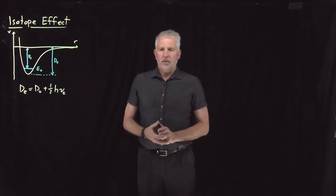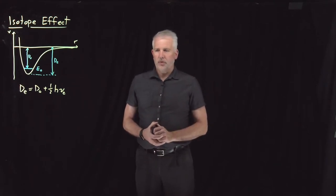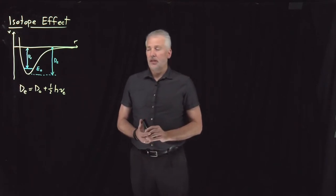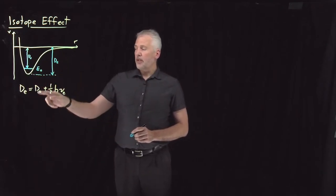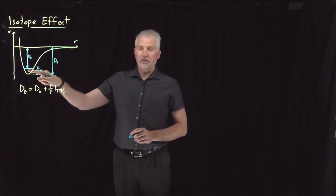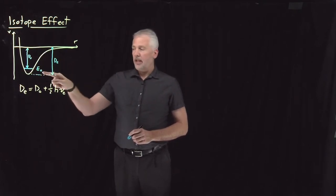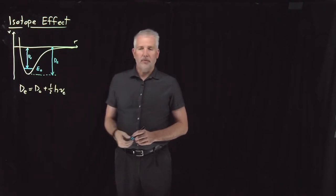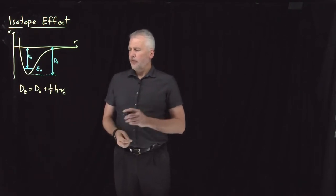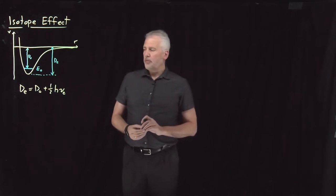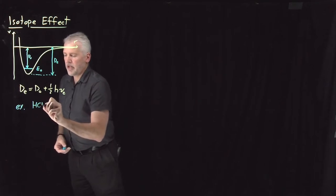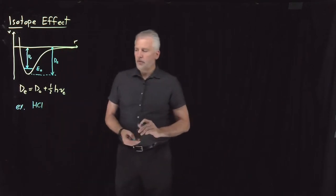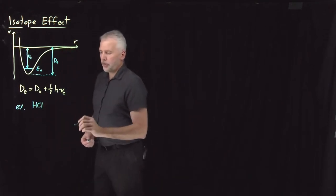Now it's time to understand what isotope masses have to do with bond dissociation energies, based on our understanding of these covalent chemical bonding wells and the difference between the dissociation from the zero point energy — the dissociation from the ground state — versus this hypothetical dissociation from the bottom of the well. So first, if we use some actual numbers for real molecules, let's take a hydrogen chloride molecule.